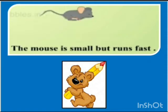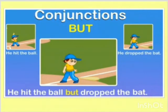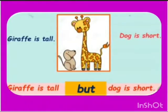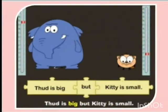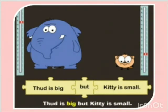The mouse is small but runs fast — two different opposites are given. He hit the ball but dropped the bat. Giraffe is tall but dog is short — the conjunction 'but' is added. Thad is big but kitty is small — the conjunction 'but' is added over here.